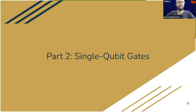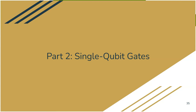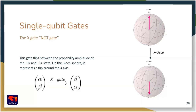In the first part, we saw what a quantum system is and how to describe its state with the state vector. Now let's see how to modify the state by applying gates. I'll mainly focus on single qubit gates. The first gate is the X gate. This gate flips between the probability of the zero and one states. So if you have initially alpha and beta, after applying the X gate you get beta and alpha. It flips around the X axis — you go from one to zero or zero to one.